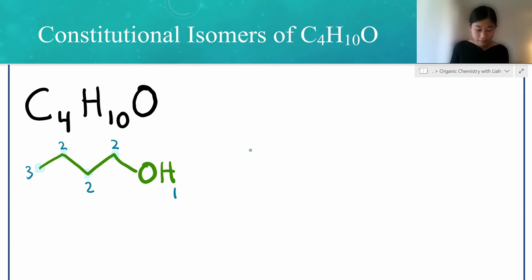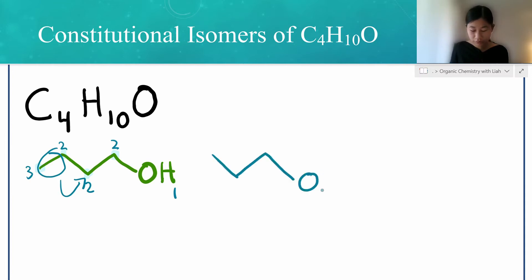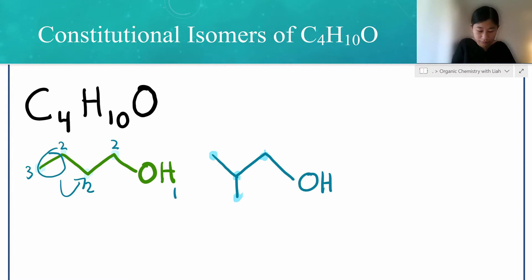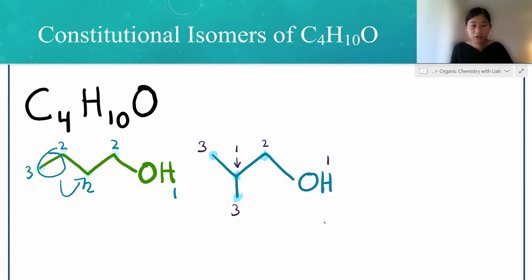Now let's draw it a different way. One thing you could do is move this line over to this carbon. Removing that first line and starting with this one, we still have the OH at the end, but now we have a line coming down here. Counting to verify: we have four carbons and ten hydrogens — three, three, one, two, and one. So this is also a constitutional isomer for this formula.